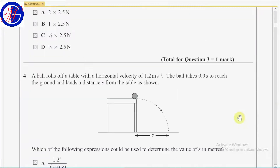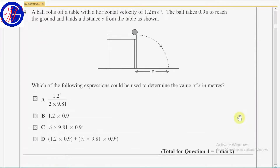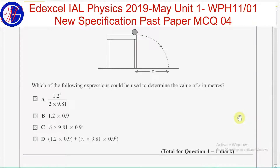Question 4. A bowl rolls off a table with a horizontal velocity of 1.2 m per second. The bowl takes 0.9 seconds to reach the ground and lands a distance s from the table as shown. Which of the following expressions could be used to determine the value of s in meters?